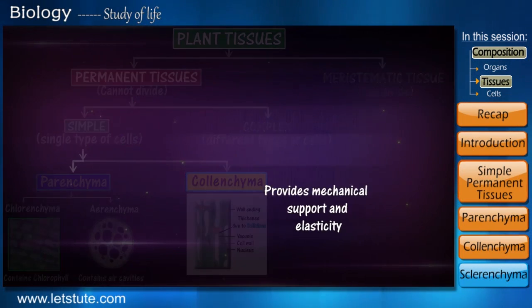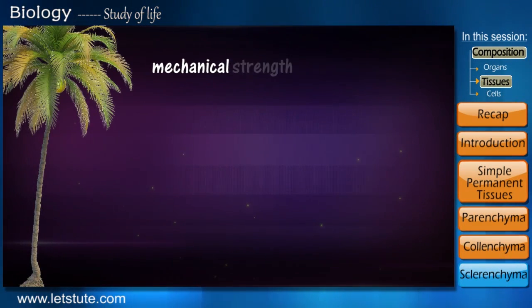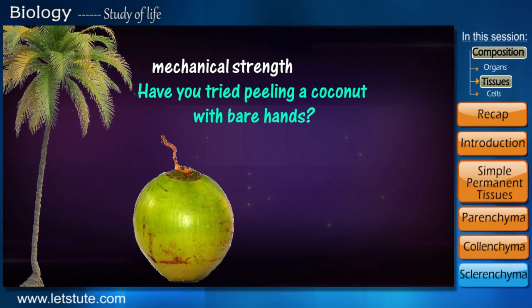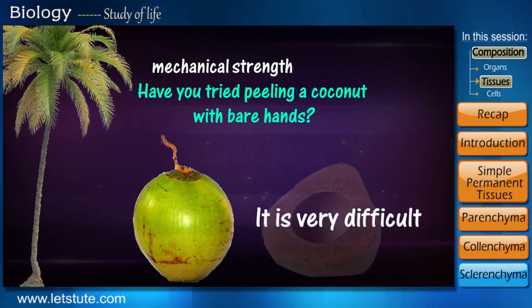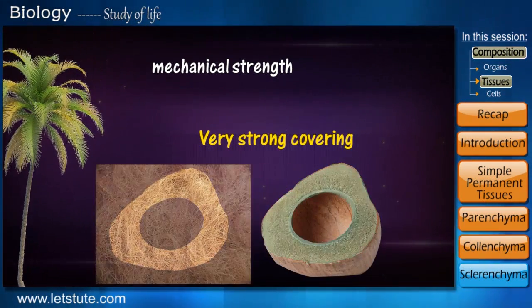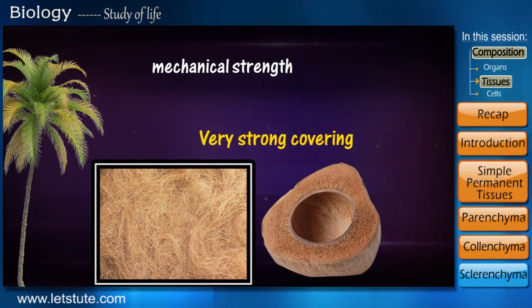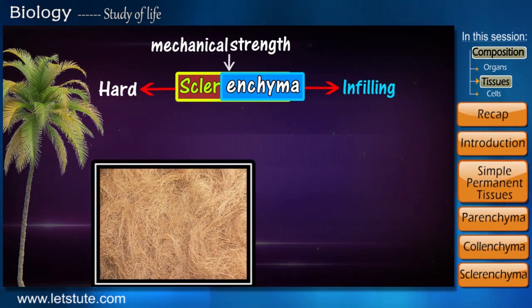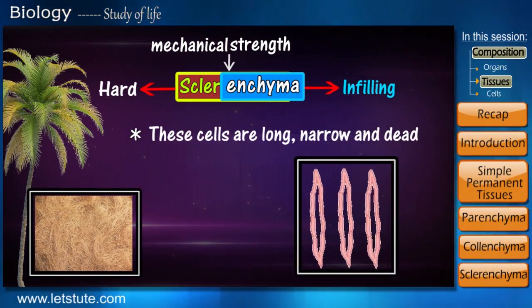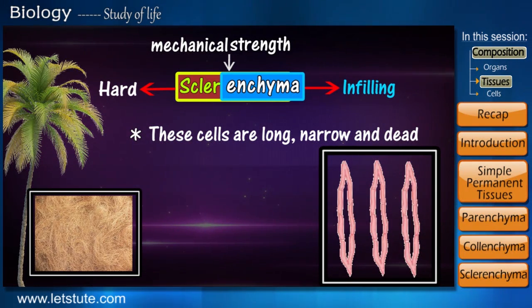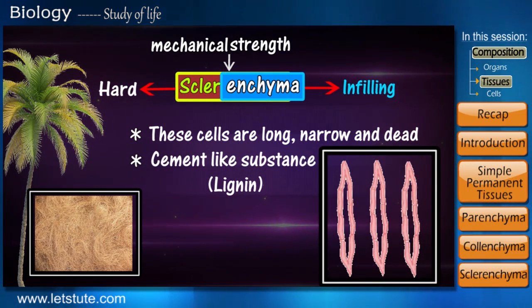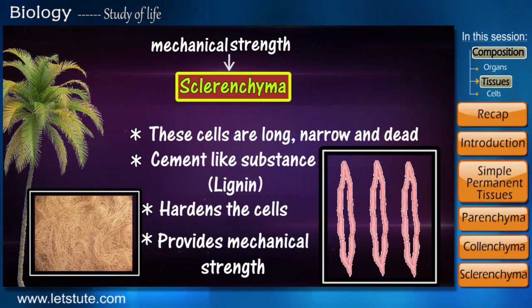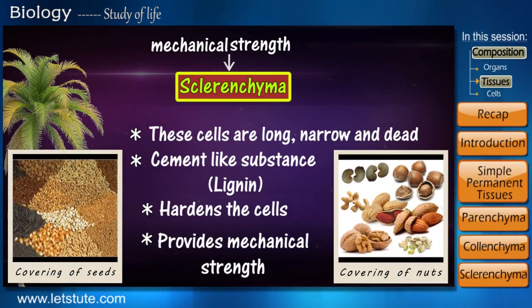Have you ever tried peeling a coconut with your bare hands? It is very difficult as the covering is very strong. This covering is made up of another type of simple permanent tissue called sclerenchyma. The cells of this tissue are long, narrow, and dead, and are packed completely with a cement-like substance that hardens the cell and provides the necessary strength. Therefore, it is also found in the outer covering of seeds and nuts.